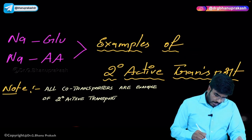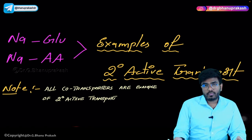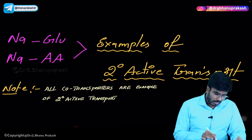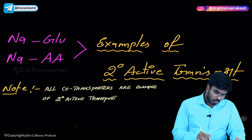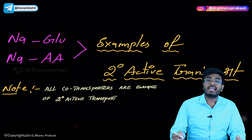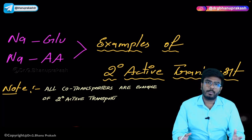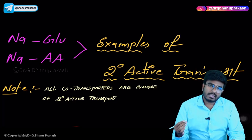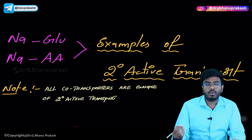Sodium is reabsorbed along with glucose and amino acids via secondary active transport — all co-transporters follow this mechanism. We've now completed the important topics of the PCT. Next, let's move on to the descending limb of the loop of Henle, the hairpin turn, and the ascending limb of the loop of Henle.